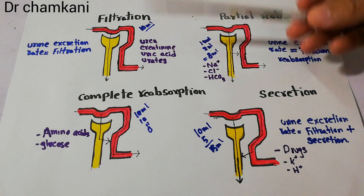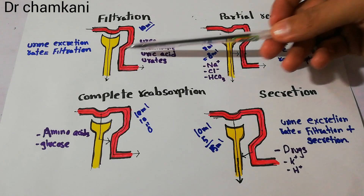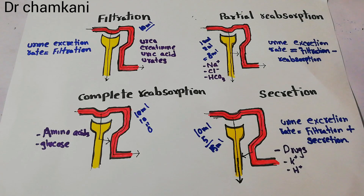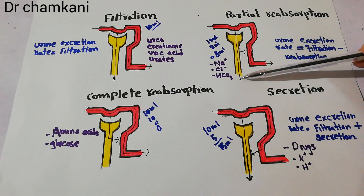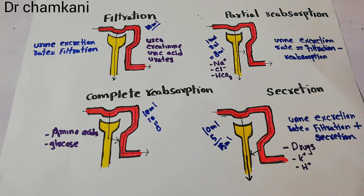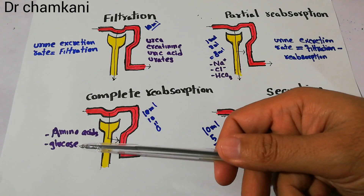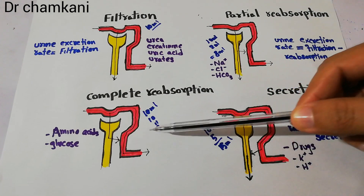To recap: urea, creatinine, uric acid, and urates are only filtered and removed from the body as end products — they are neither reabsorbed nor secreted in the tubules. Sodium chloride and bicarbonate, depending on their level in the body, may be reabsorbed in large or small amounts; if body requirement is high, a large amount is reabsorbed and only a small component appears in urine, but if requirement is low, a large component appears in urine. Amino acids and glucose in a normal person are filtered but completely reabsorbed into the peritubular capillaries.